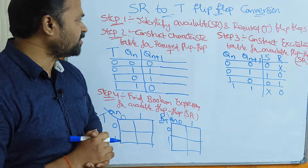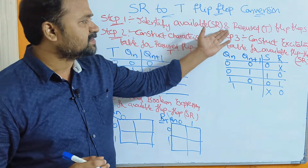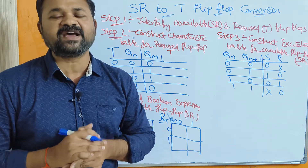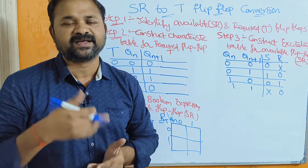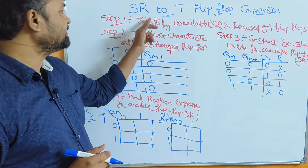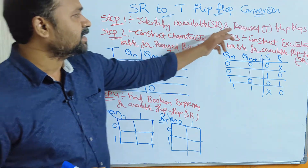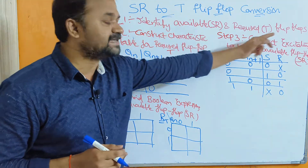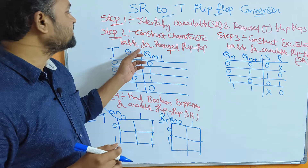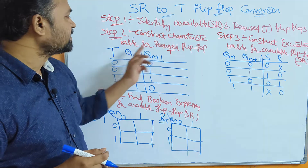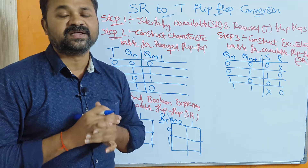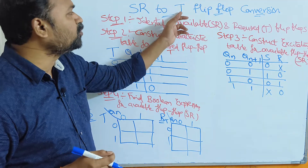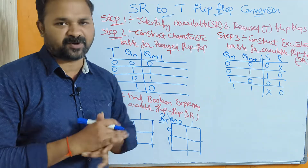Step 1: identify the available and the required flip-flop. The available flip-flop is the input flip-flop, that is SR flip-flop. The required flip-flop means output flip-flop, that is T flip-flop. The second step is construct characteristic table for the required flip-flop, which is the T flip-flop.